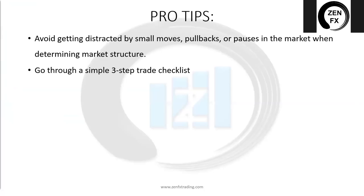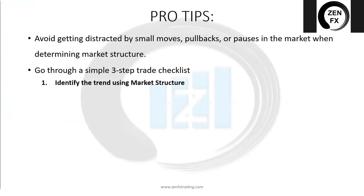I'm going to give you a simple three-trade checklist. No matter what trading style, indicator, template, or method you use, make sure you have these three things done first before you do anything else. I guarantee it will greatly increase your win-loss ratio and make you a much more consistent trader. First thing: identify the trend. Just like we've done today — look at the market structure. It'll take you two to three minutes tops. Look for whether you're in a trending market or a consolidating market. If you're in a consolidating market, look for a different pair that's giving you obvious momentum.